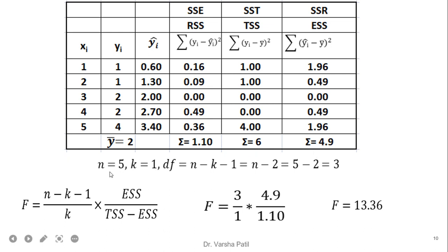The degrees of freedom is N − K − 1. With 5 total records and one independent variable, the degrees of freedom = 5 − 1 − 1 = 3. Substituting into the F-test formula: N − K − 1 = 3, K = 1, ESS = 4.9, and RSS (or TSS − ESS) = 1.10. The calculated F statistic = 13.36.